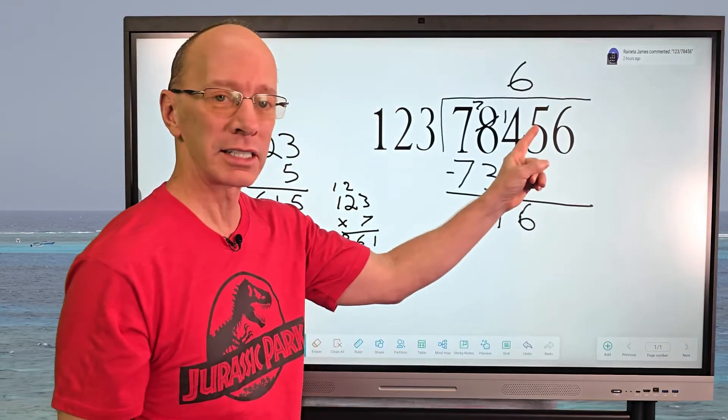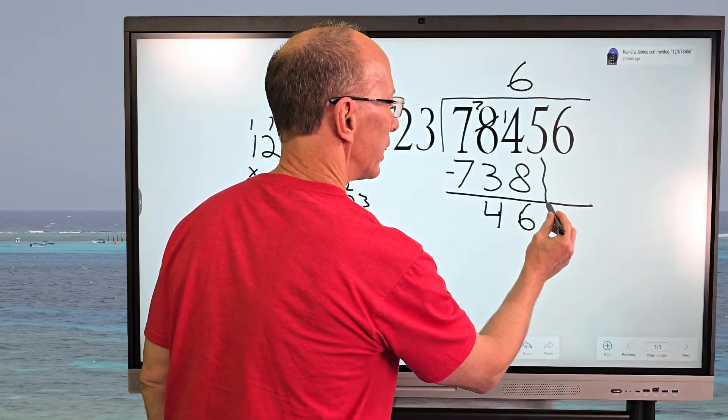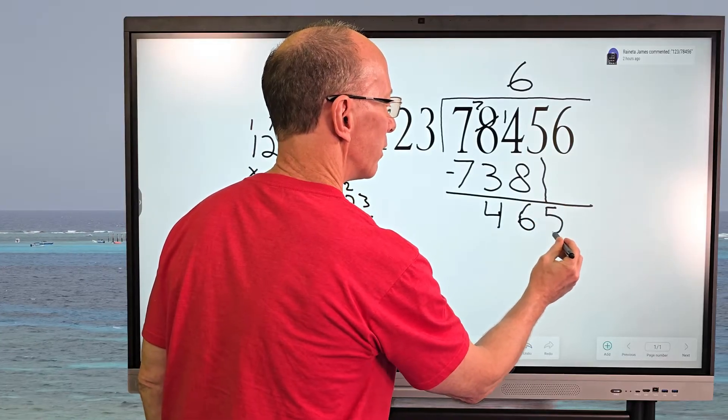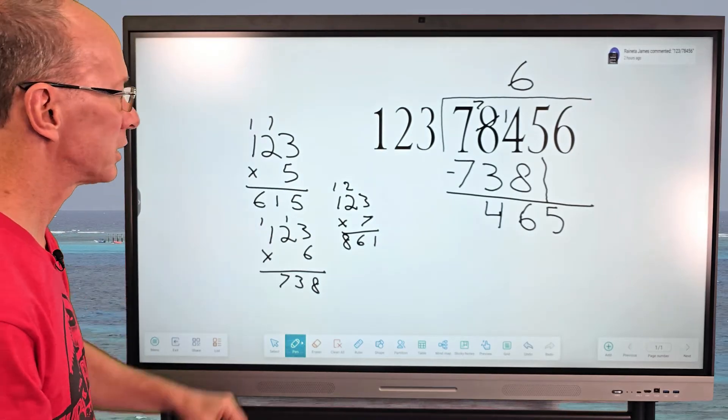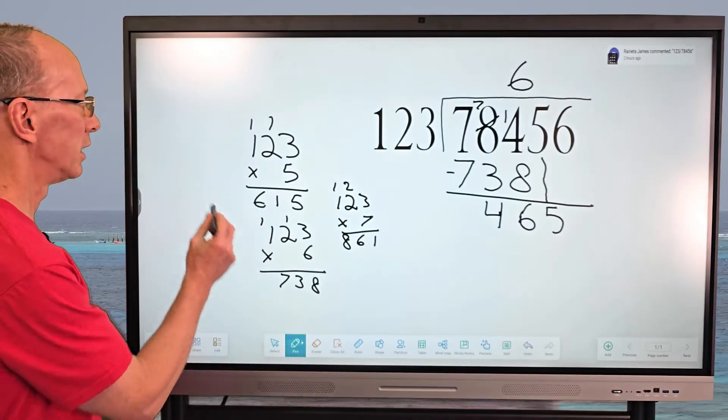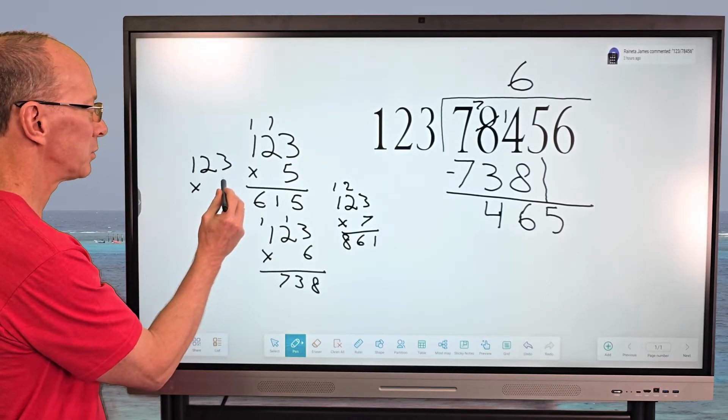And then I drop the next number down, which is a five. I'm going to drop that five all the way down right here. So now I have 465. Do I have anything with 465 right here? No, I do not.